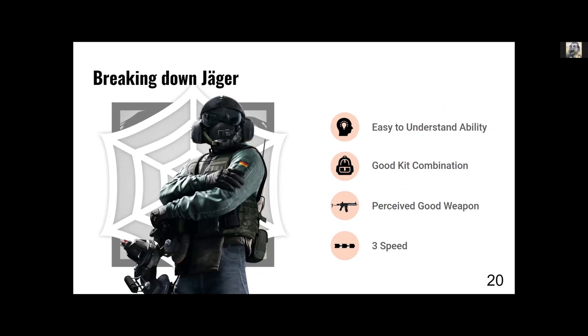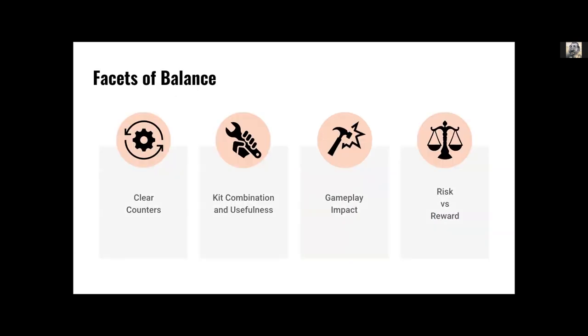Looking a bit deeper into what the players were saying, by looking at some of the key words from the comments. So we saw that he had a very easy to understand and identify ability, meaning that his counters to his ability were quite clear. At higher levels of play he did have a good kit combination, but it was mostly only leveraged to the maximum capacity at the highest level. He did have a perceived good weapon, even despite it being statistically mostly average. And we did see though that players were also noting that he is a three speed, which is the fastest speed possible, but that when we looked at the priority level here, we started to see some interesting things we saw with our frustration as well. What we noticed when looking at Jaeger was we started to see the similar facets emerging that contribute to both the fairness feeling as well as the feeling of frustration.